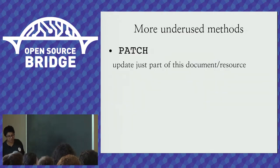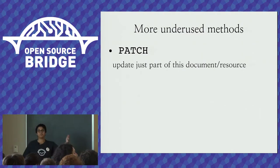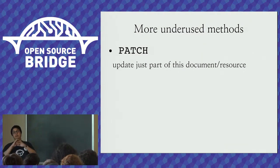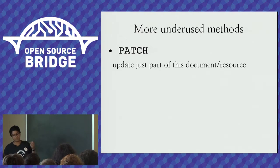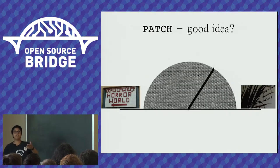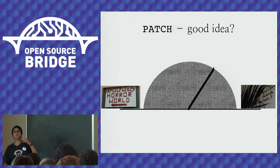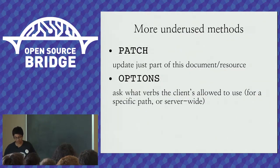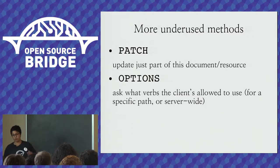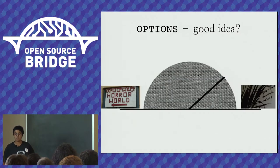Some more underused methods: PATCH — update just part of a document or resource. It's not 100% implemented in all libraries, but if you have it, it's a pretty good idea. OPTIONS — think about Picard saying 'I want options.' It's a way of asking what methods the server supports, either for a specific resource or server-wide. Also a pretty good idea.